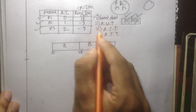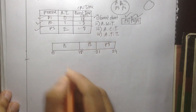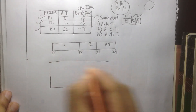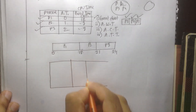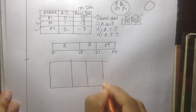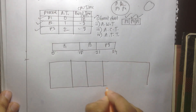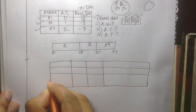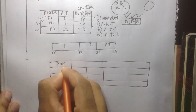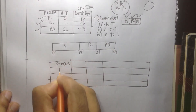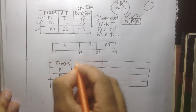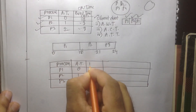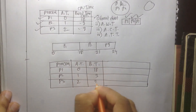Now we need to find the average waiting time, average completion time, and average turnaround time. We have the process table with processes P1, P2, and P3. The arrival times are 0, 1, and 2, and the burst times are 18, 3, and 3.